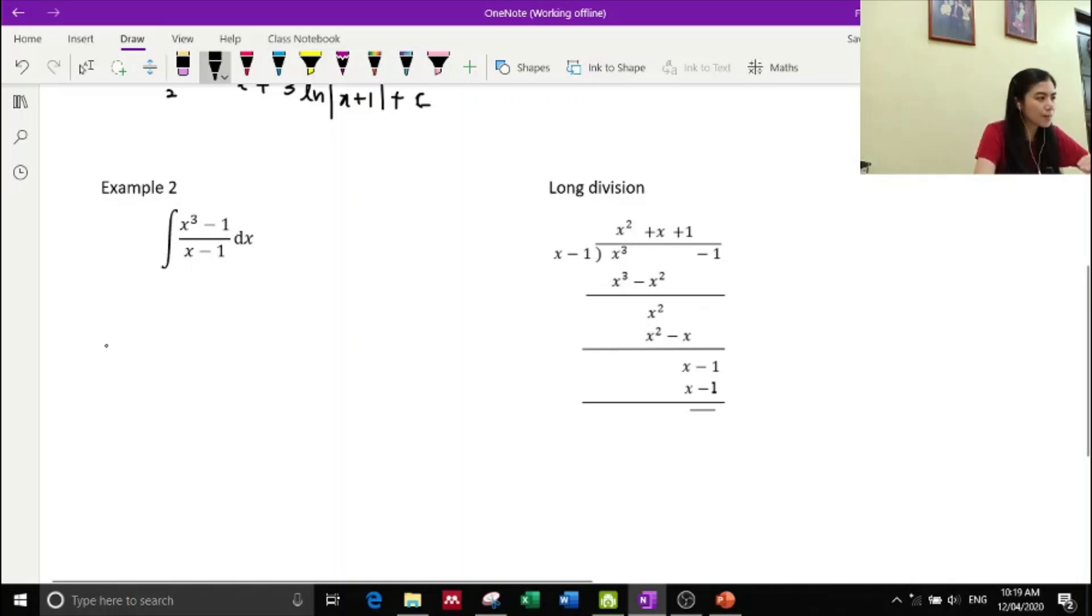Okay, so never mind, let's just go for the integration part. So the answer of the long division is only x squared plus x plus one. So we have x squared plus x plus one, and we have the dx.